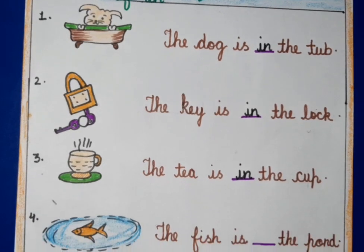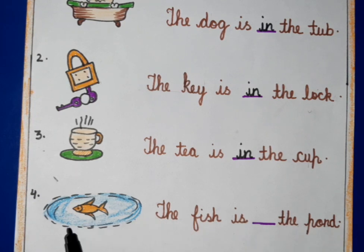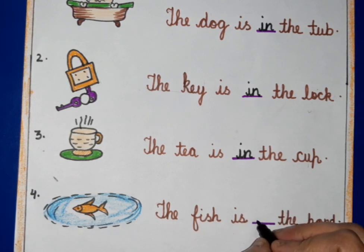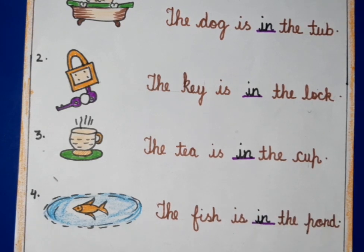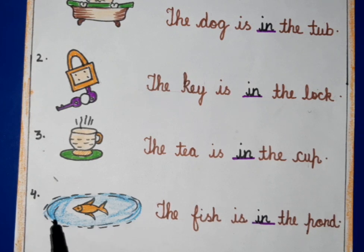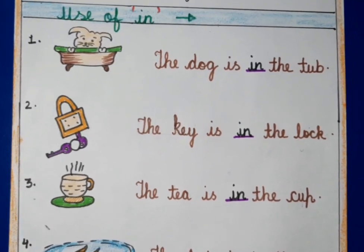As you can see the picture, the fish is in the pond. Fish hai pond ke andar. So we will write 'in' here. The fish is in the pond. Aap deekh saktay hain, fish is in the pond.